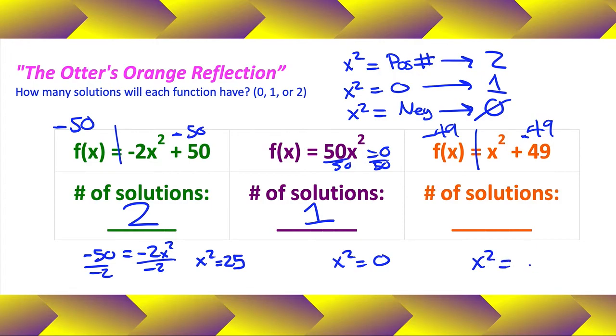If we have an x squared equals a negative 49, and you try to square root this, your calculator is going to say no. So this is no solutions. There are none. There are zero solutions.